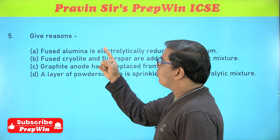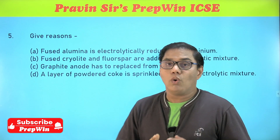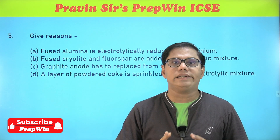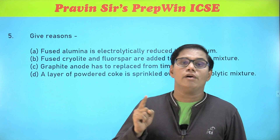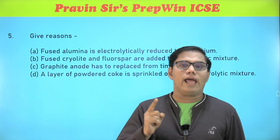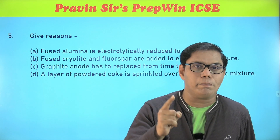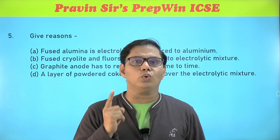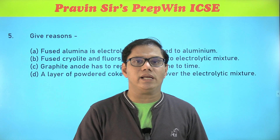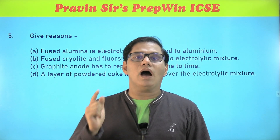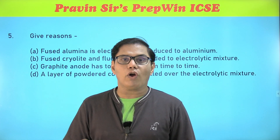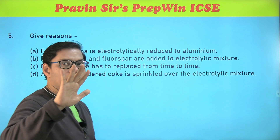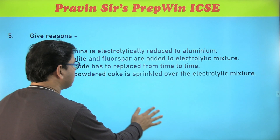Moving on to the last prediction from this chapter — it is related to 'give reasons.' One of these four give-reasons questions will definitely find a place in your examination paper. The next chapter for semester two chemistry is hydrogen chloride, and from this chapter I am also going to make five predictions.